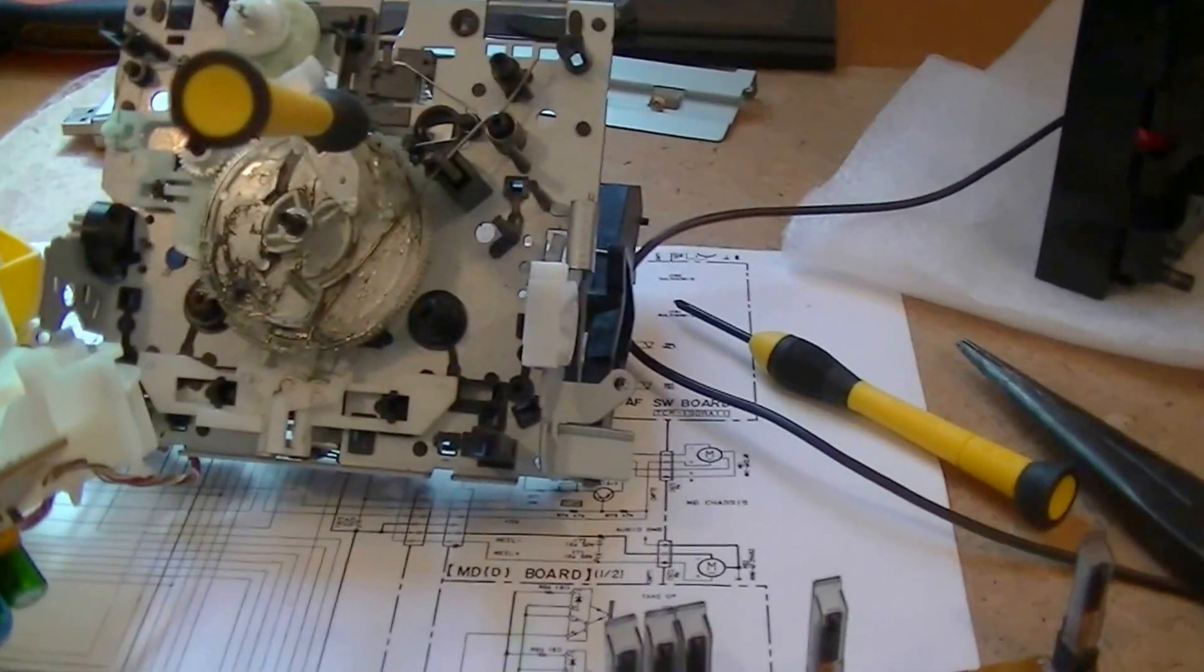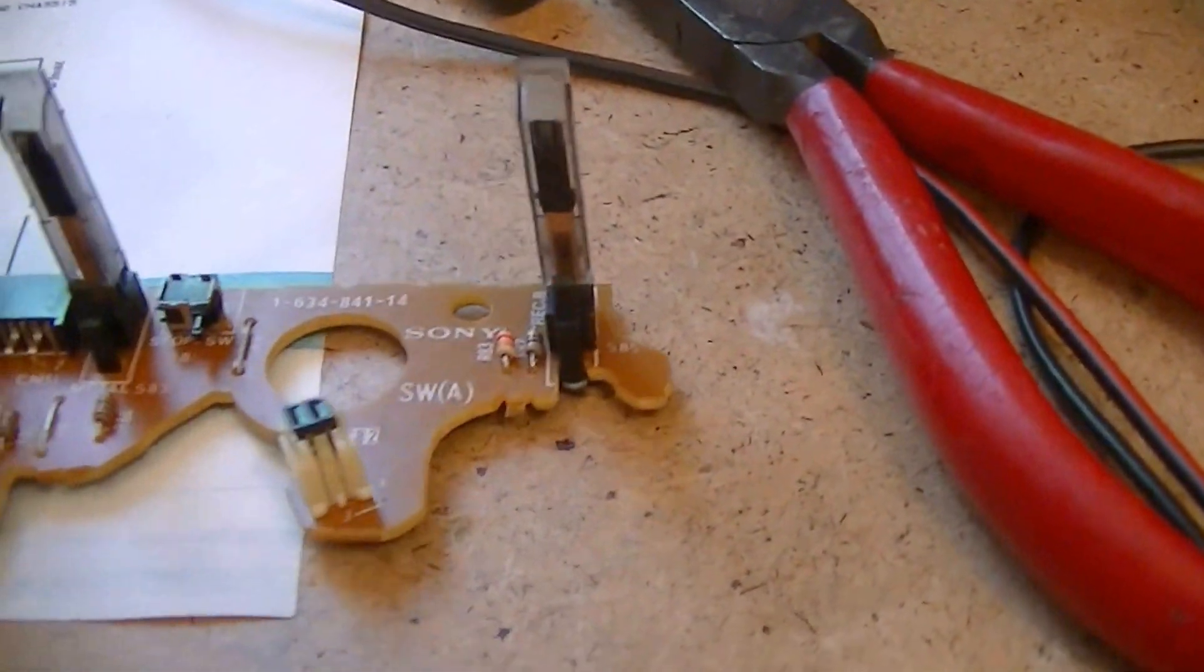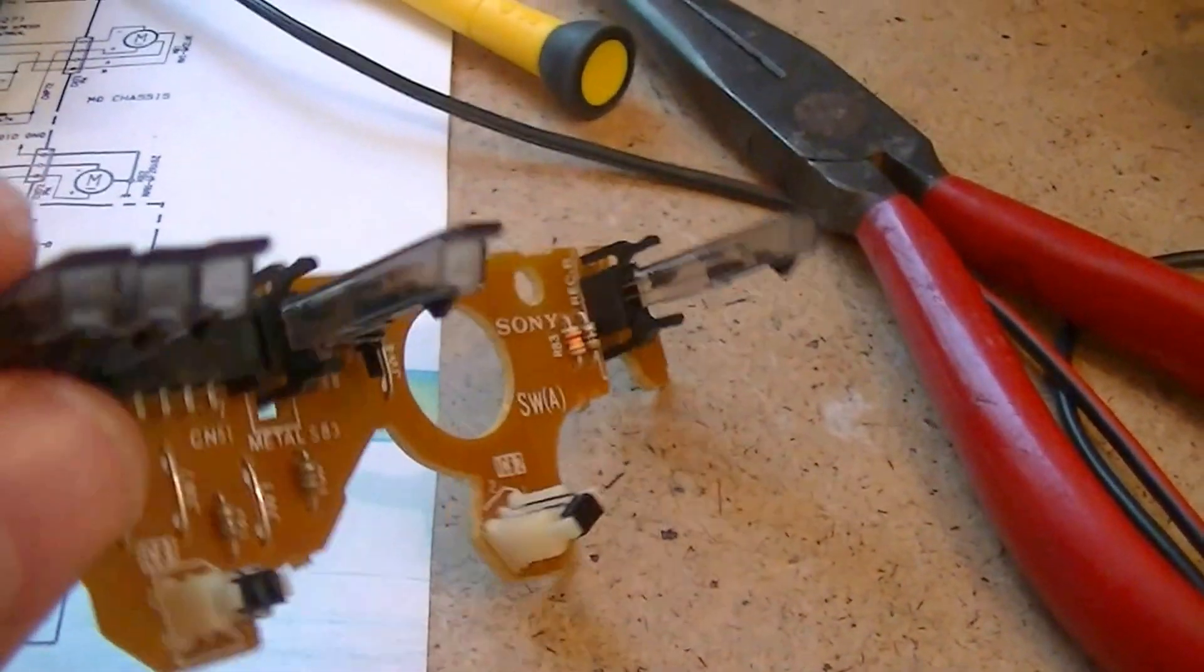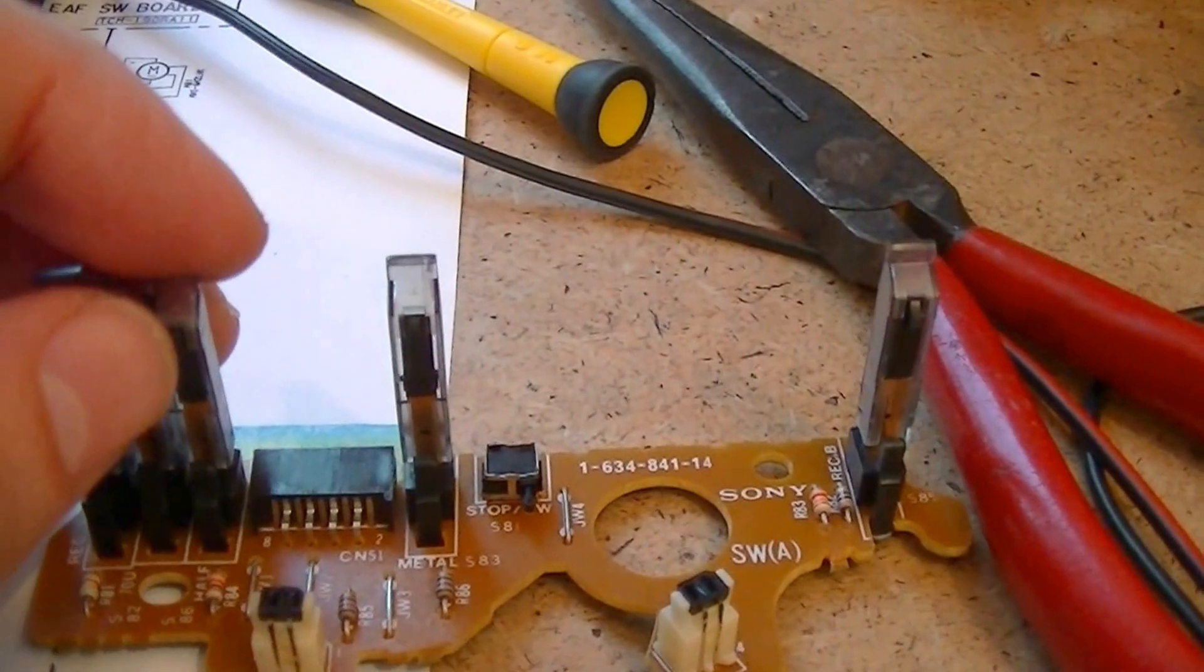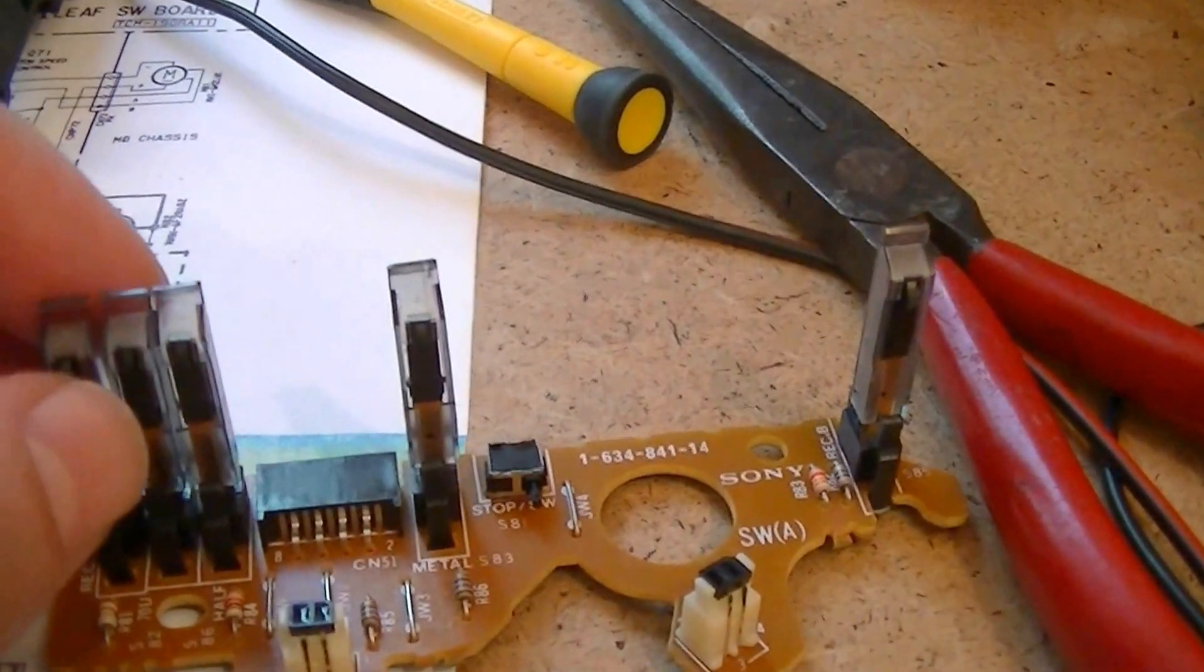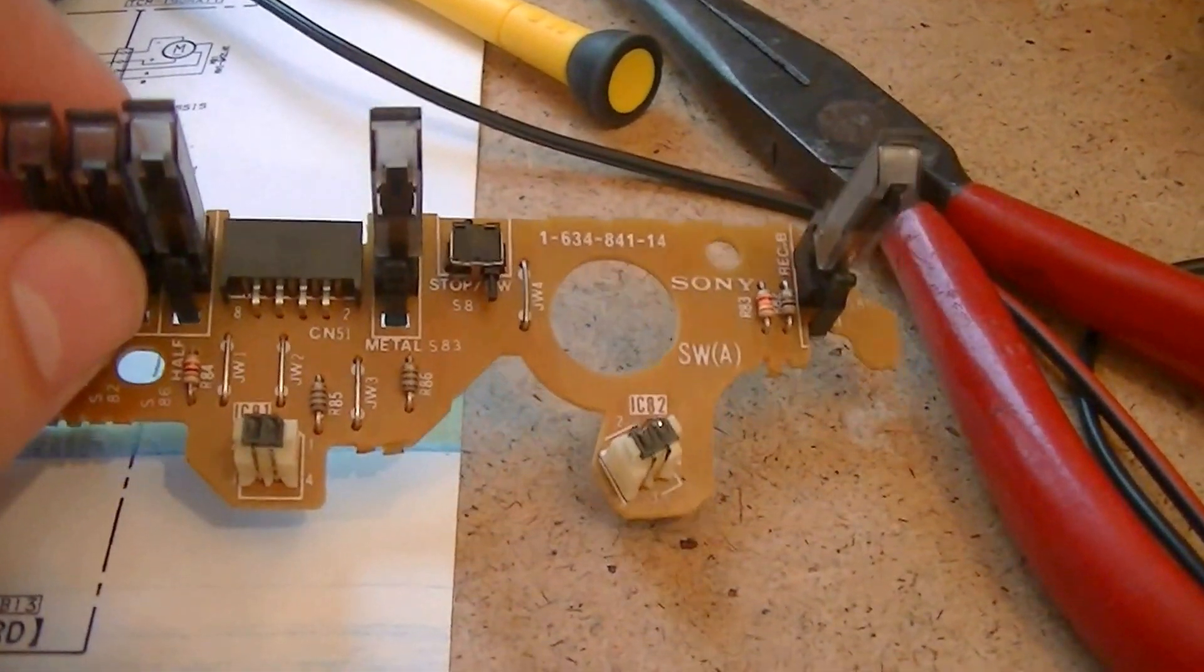In this deck, the autostop system starts here. This board has some contact switches which will detect the tape type, whether it's metal or chrome, detect the presence of the tape, and also detect whether the tape can be recorded or not.